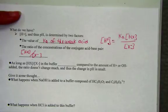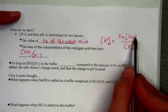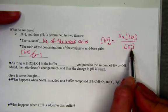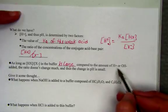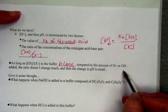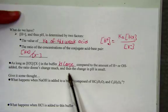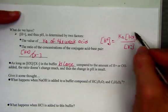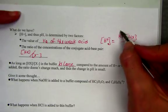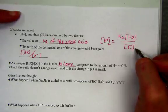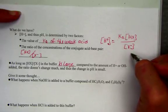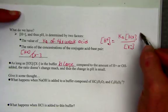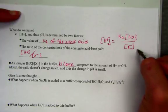So, as long as we have this ratio of HX to X negative, the acid to its conjugate base, if it's very large compared to the amount of hydrogen or hydroxide we add, the ratio doesn't change much, and thus the change in pH is quite small. So Ka is a constant, we can't change that. But we could add to a solution large amounts of the conjugate pair of HX and X negative, so that they are there ready to absorb excess amounts of acid or base.